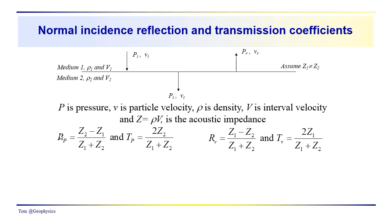We noted that we could come up with quantities referred to as the reflection coefficient and the transmission coefficient. We have a reflection coefficient for the pressure: a certain pressure disturbance is incident on the boundary, a certain fraction is reflected back towards the surface, and a certain fraction is transmitted deeper into the subsurface. The amount reflected was R_p = (Z2 − Z1)/(Z1 + Z2), and T_p = 2Z2/(Z1 + Z2). We had similar quantities for the reflected and transmitted particle velocities.